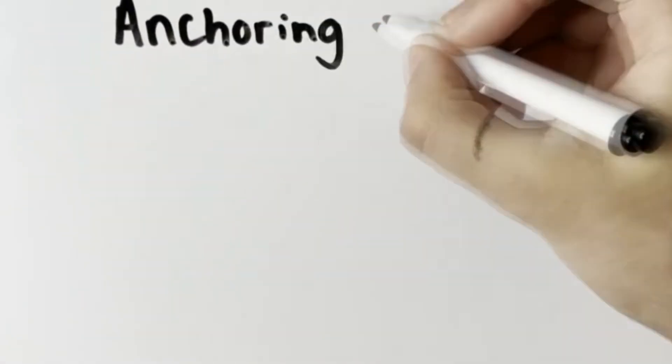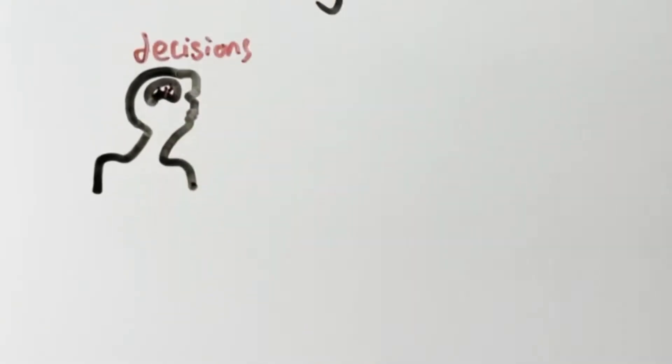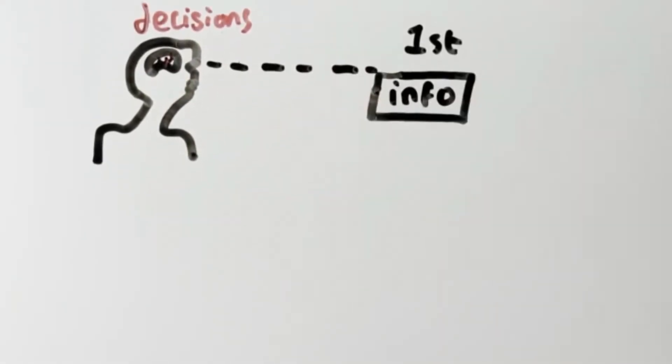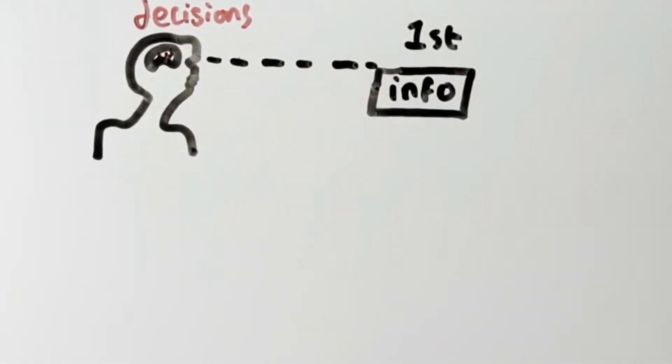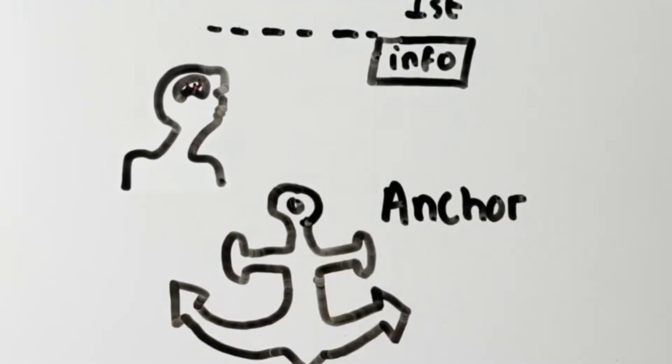One of these techniques is called the anchoring effect. The anchoring effect is the phenomenon whereby our decisions are heavily based on the first piece of information we see, regardless of whether that information is accurate or not. The first piece of information is called the anchor because once we've seen it, we become anchored to it.